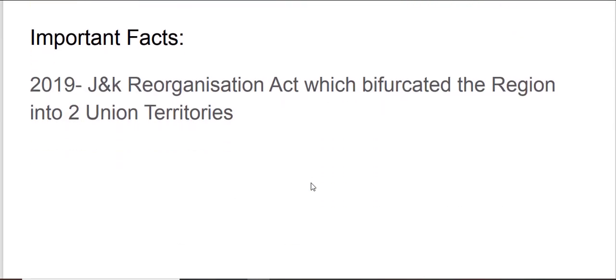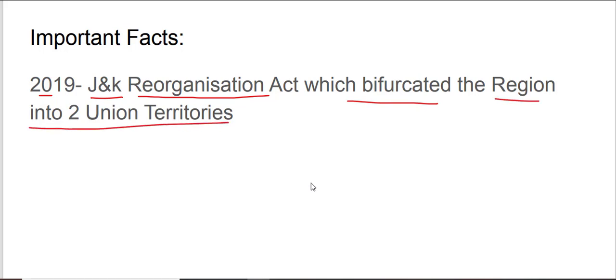In 2019, the Jammu and Kashmir Reorganization Act was passed, which bifurcated the region into two Union territories.